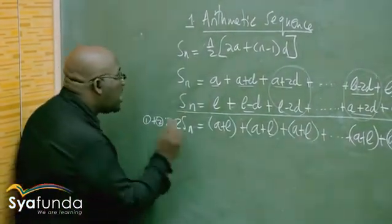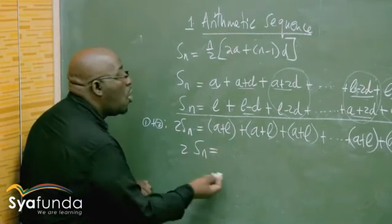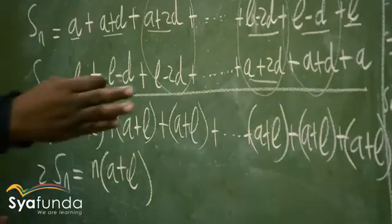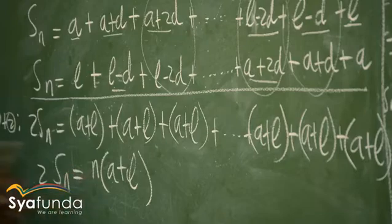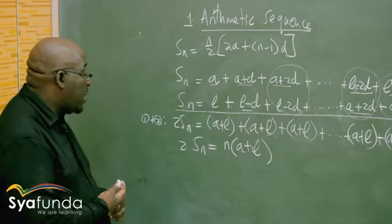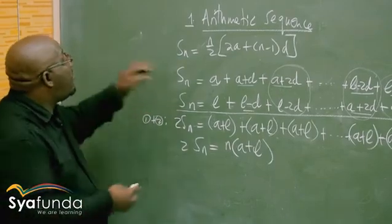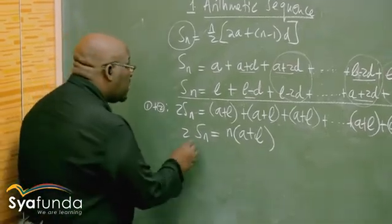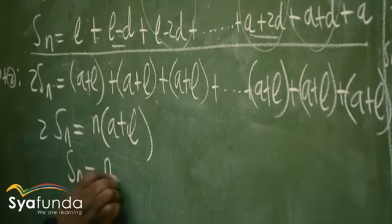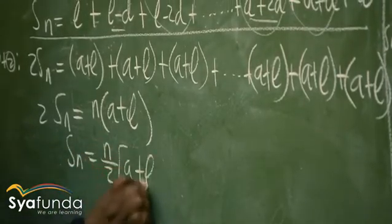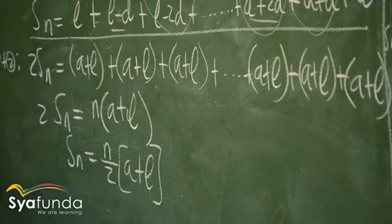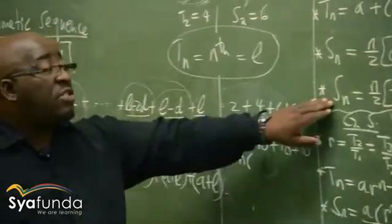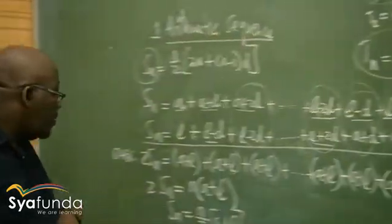So 2·S_n equals n times (A plus L). If we had about 200 terms, we'd write 200 instead of n. It stands for the number of (A plus L) pairs. Once I have this, I'm looking for S_n, so I divide by 2 on both sides. That gives S_n equals n over 2 into (A plus L). This is where that formula comes from.